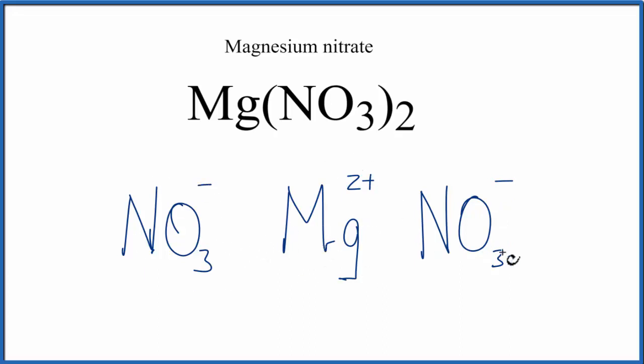This positive and these negatives are attracted, and they come together in an ionic bond. NO3 minus is called the nitrate ion. So let's replace that with a Lewis structure for the nitrate ion.